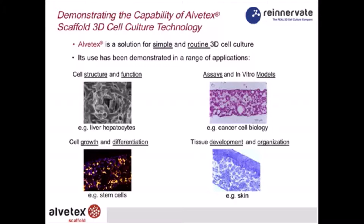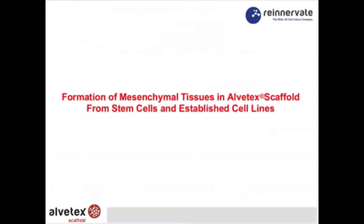Let's switch attention to a specific application regarding the formation of bone and cartilage tissues using Alvitex, primarily from stem cells isolated from primary sources. We've been working with rat adult mesenchymal stem cells, and we've also validated some observations using osteogenic cell lines — specifically MG63.